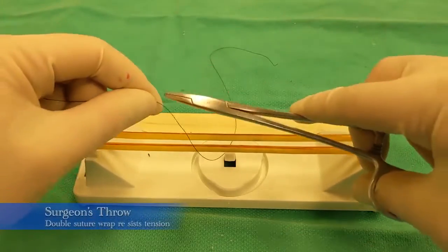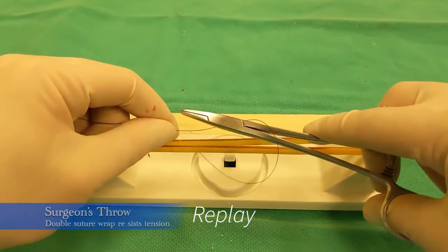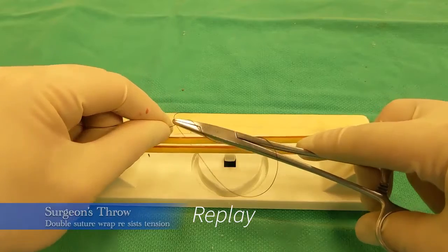Most simply, you can increase friction by starting with a surgeon's throw. To perform a surgeon's throw, the suture is wrapped around the instrument twice, rather than once, and tightened.